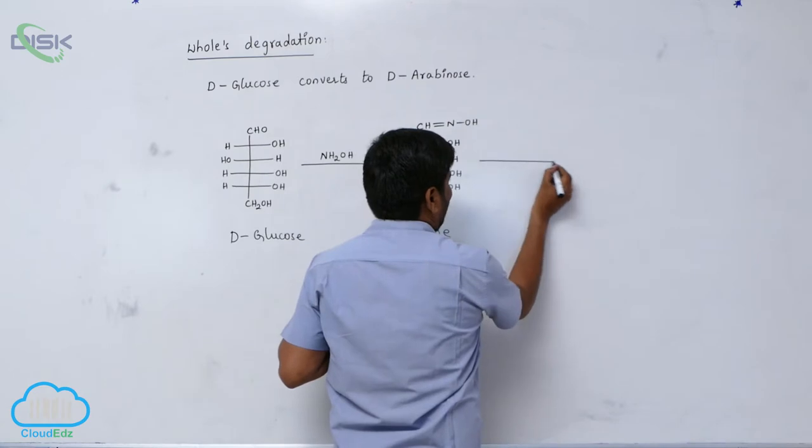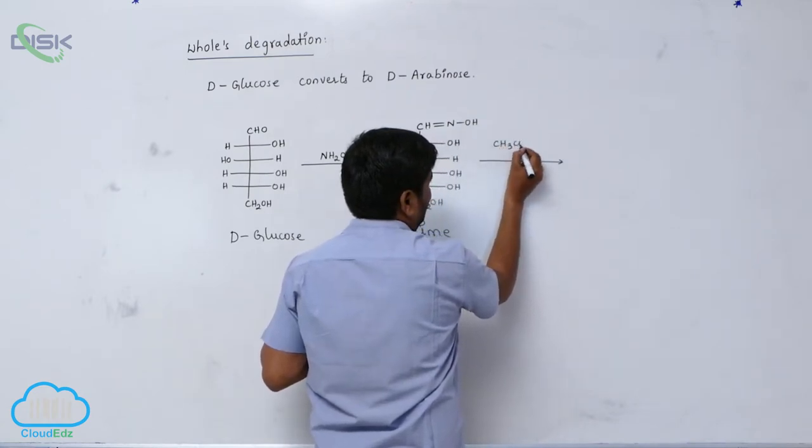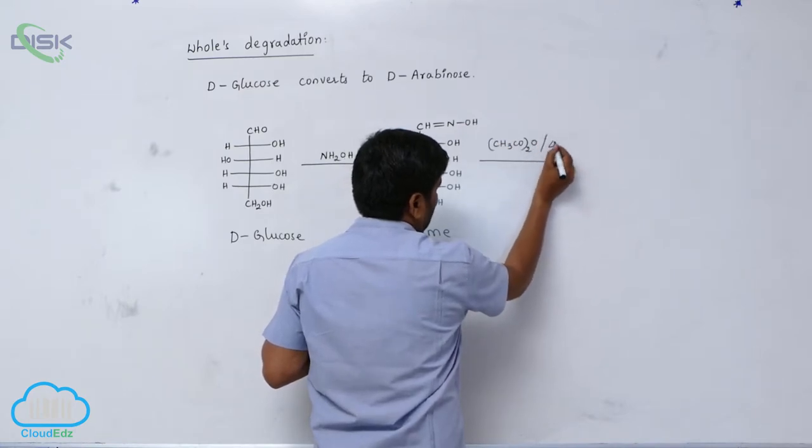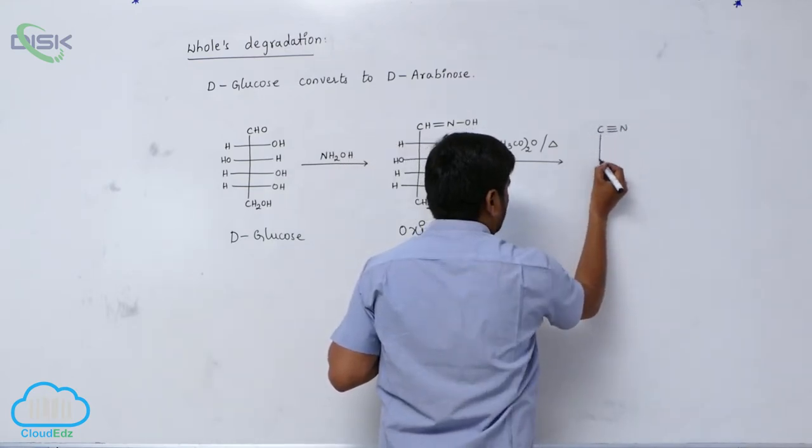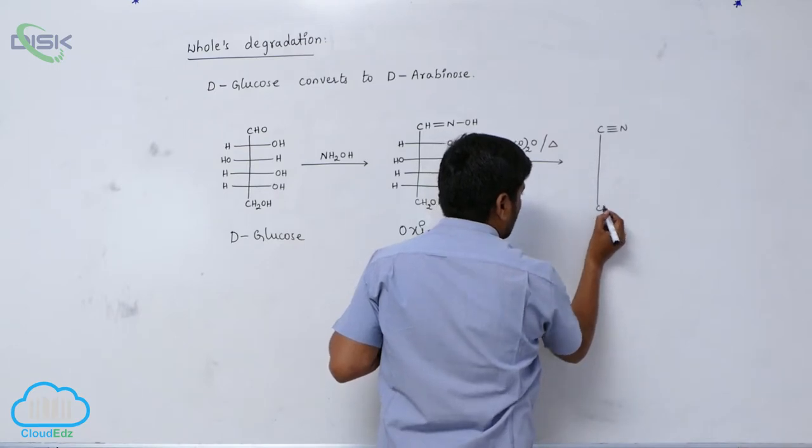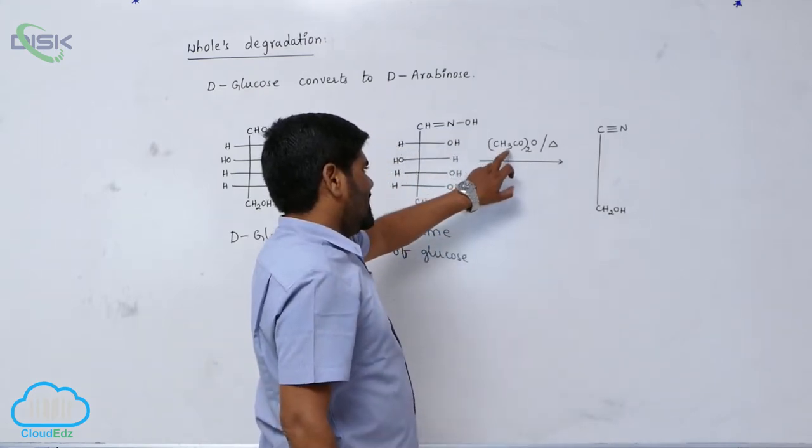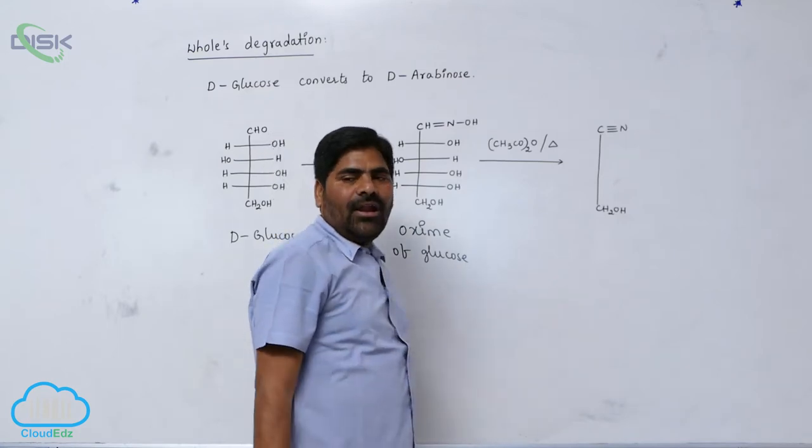This one reacts with acetic anhydride. Loss of water molecule takes place to form cyanide because now here this acetic anhydride can act as a dehydrating agent.